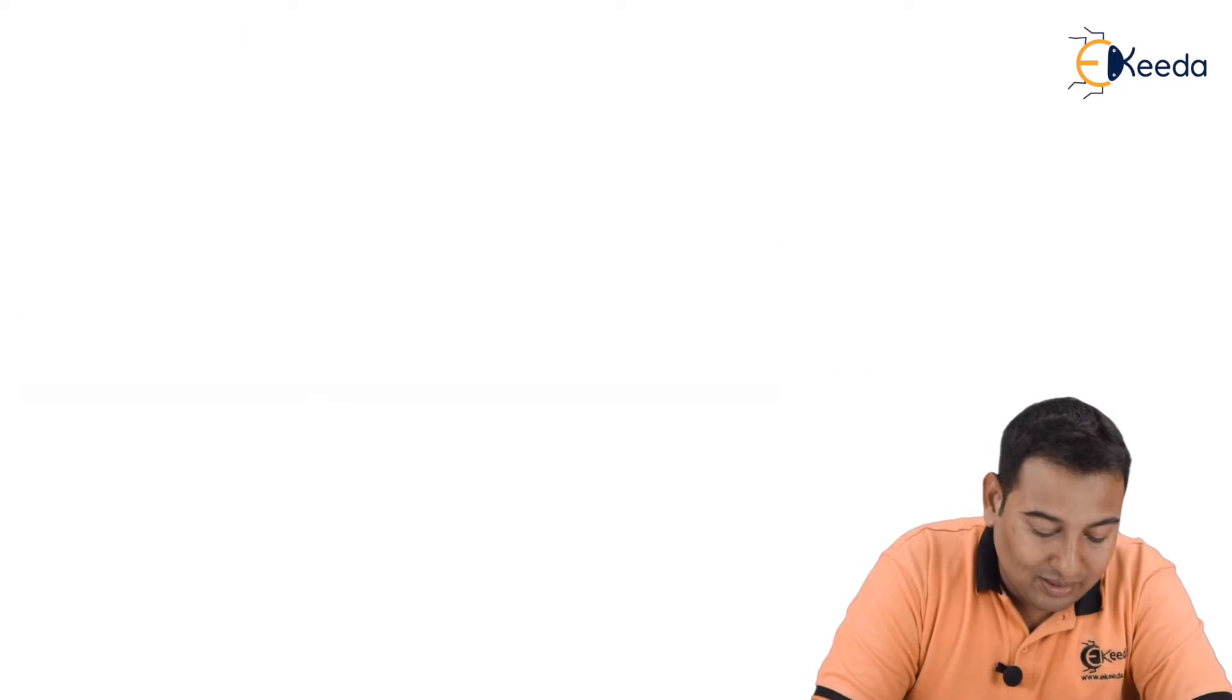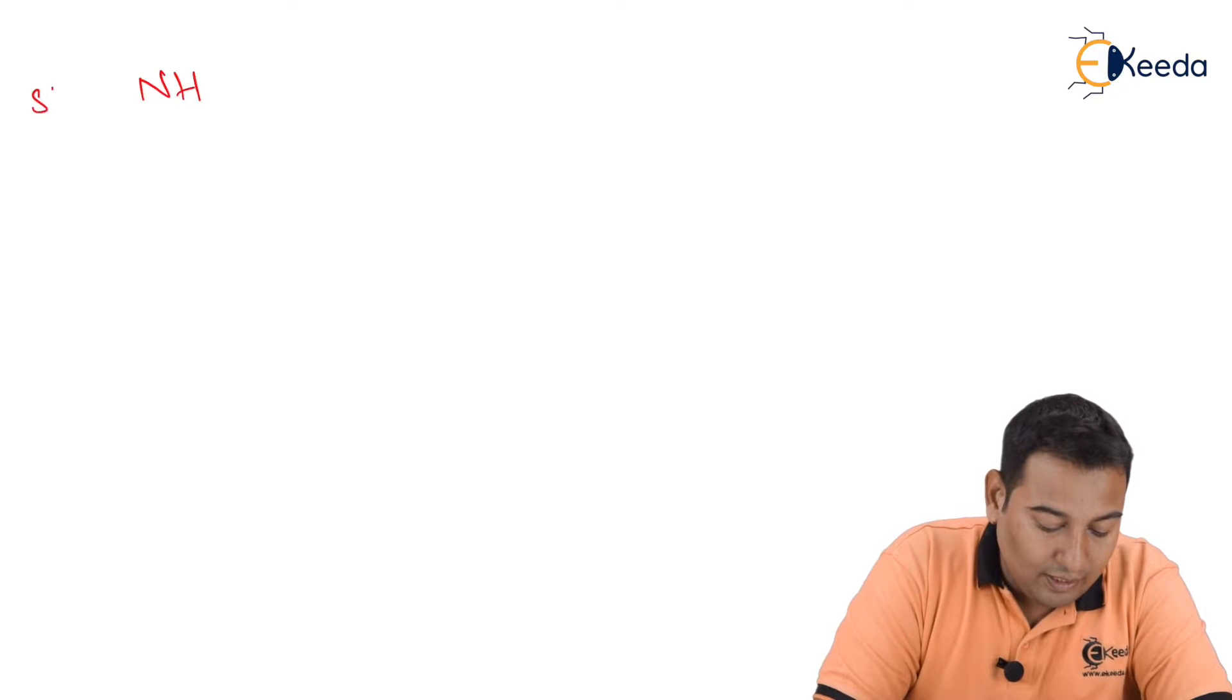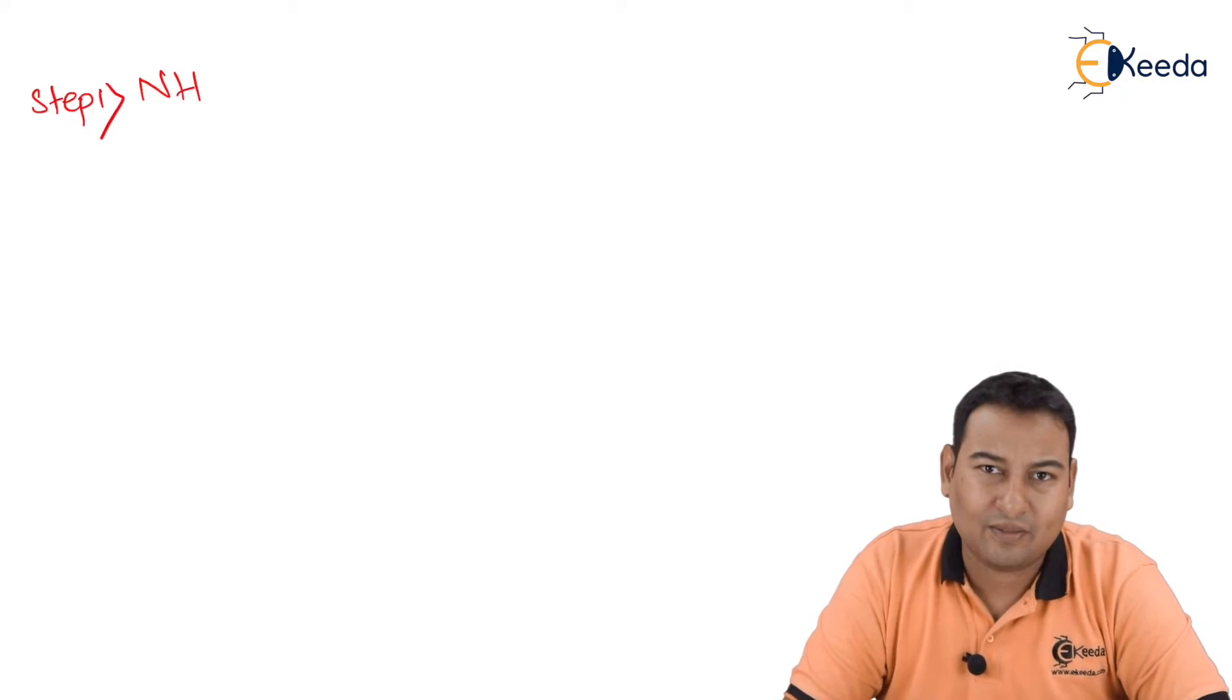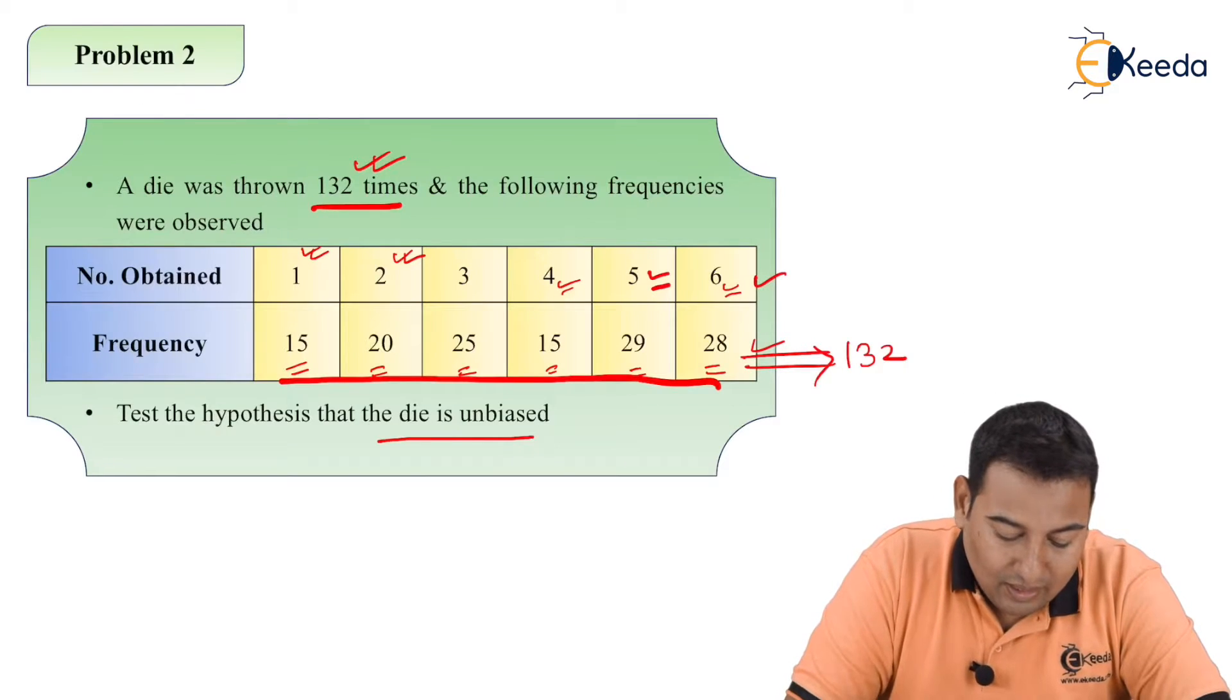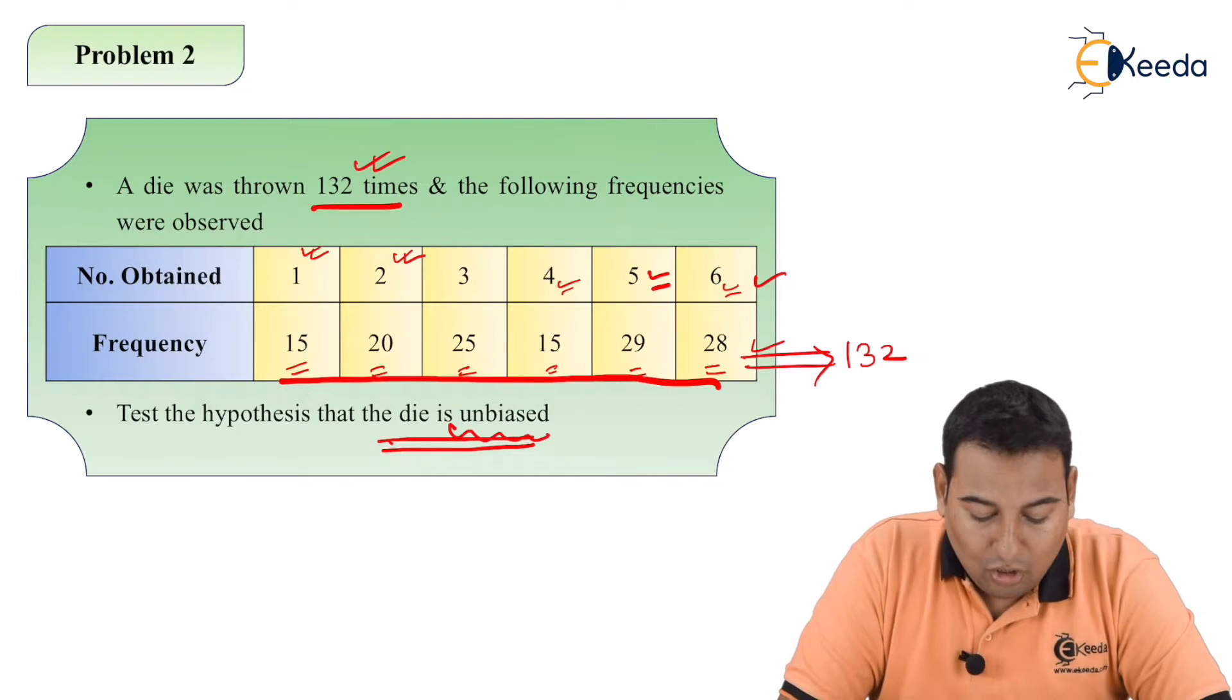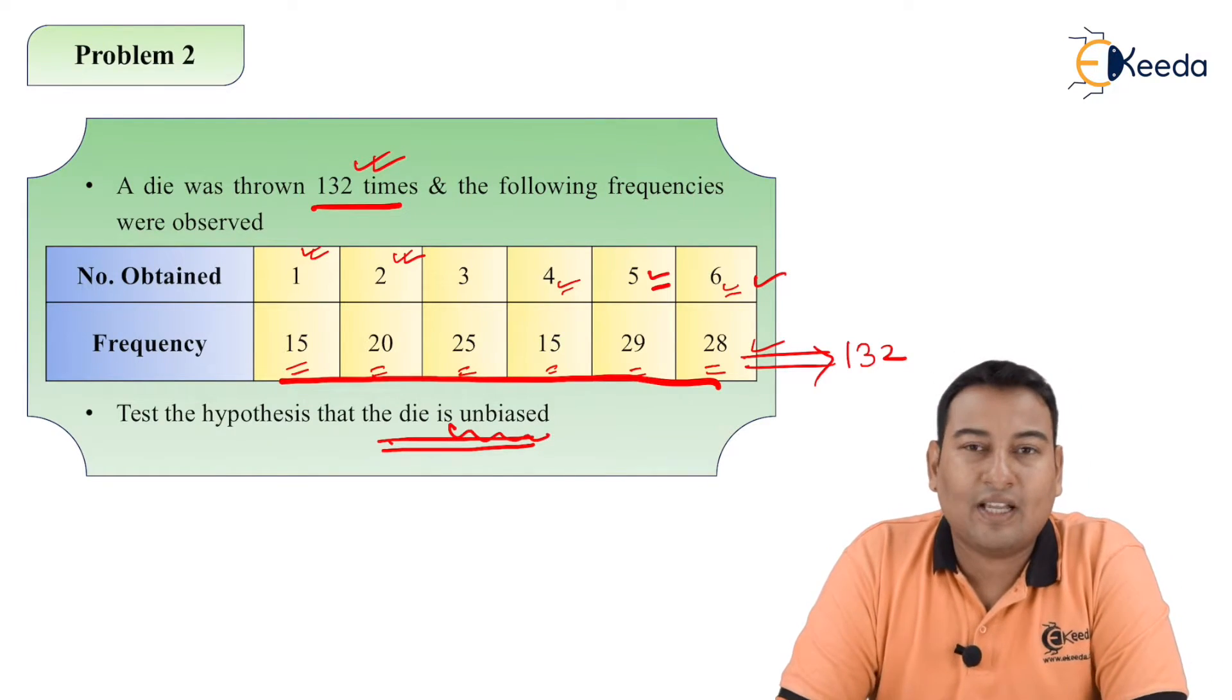This is my expectation, but this is not reality. In reality it appeared in this particular manner. So let us start with null hypothesis. As discussed, in case of null hypothesis, whatever is given you take it as it is. The problem states this is the hypothesis that the die is unbiased. What do you mean by unbiased die?